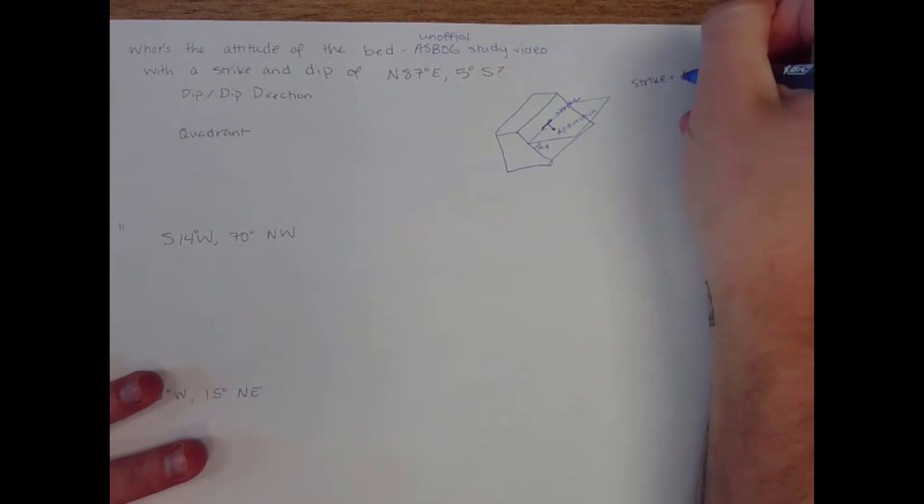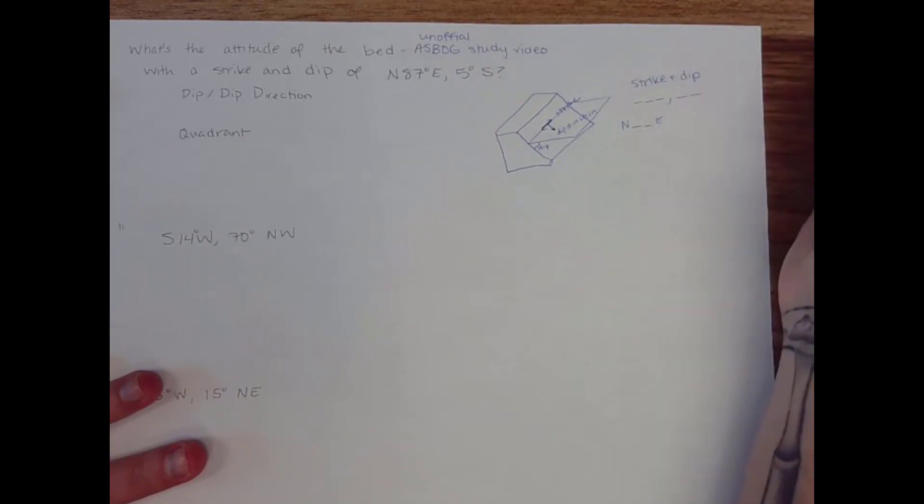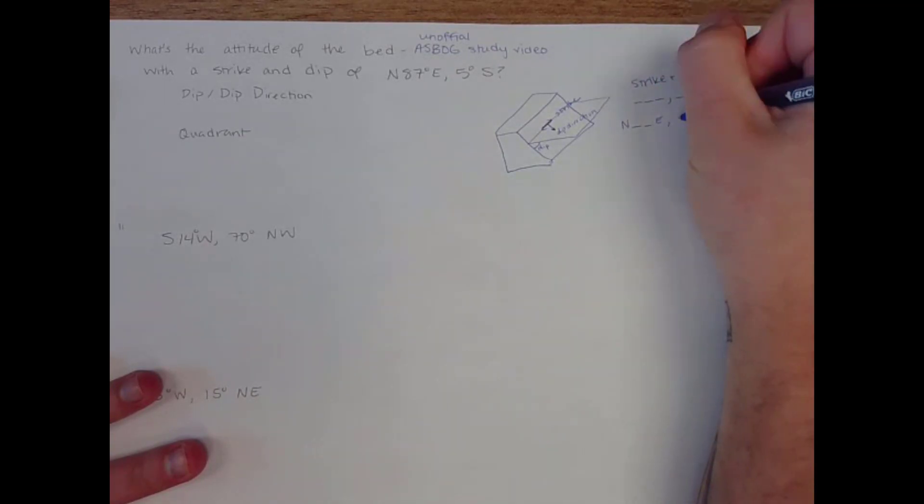Now we don't just have to do strike and dip as azimuth, where you have some amount of 360 degrees and a dip amount. You could write this as quadrant notation, which is going to have a direction like north, the value that you move around a hemisphere from north to either the east or west. So I'm just writing these as an example.